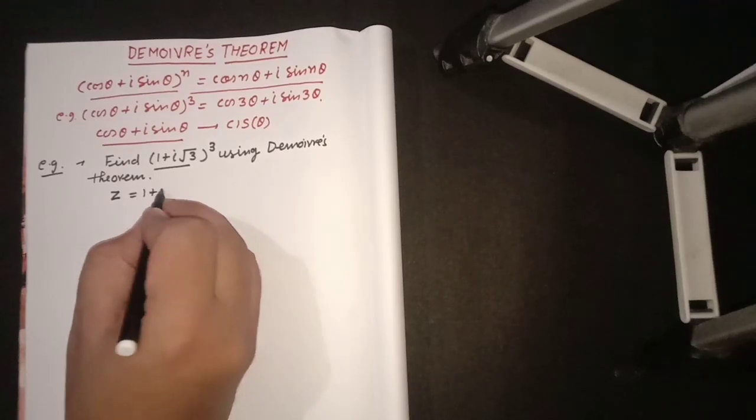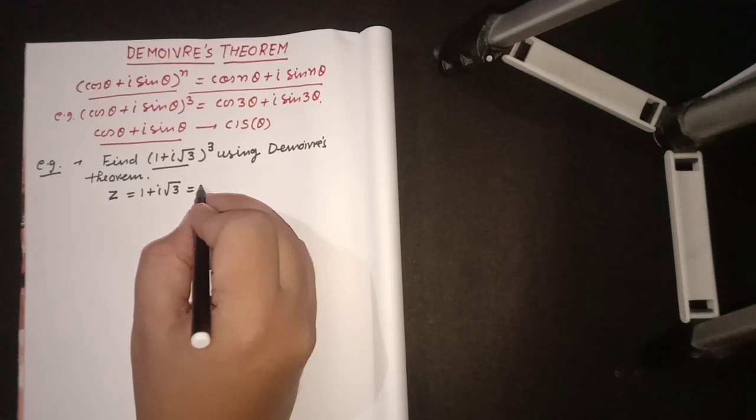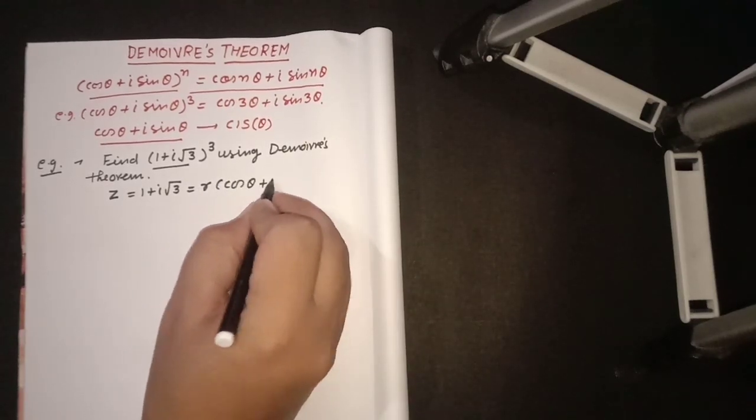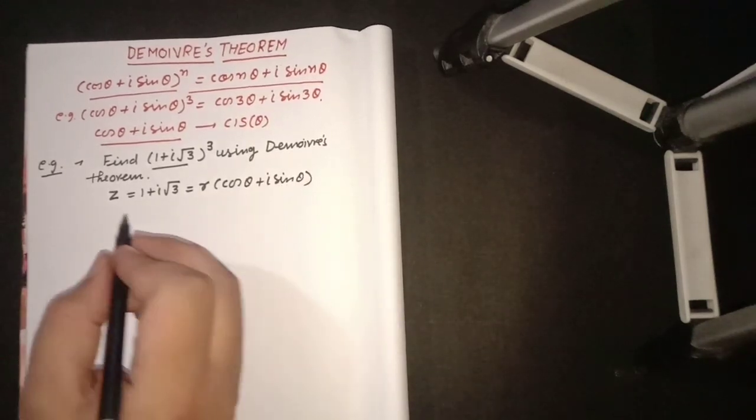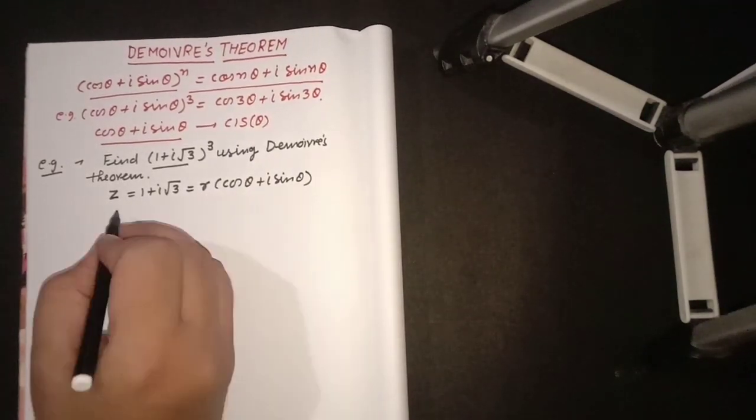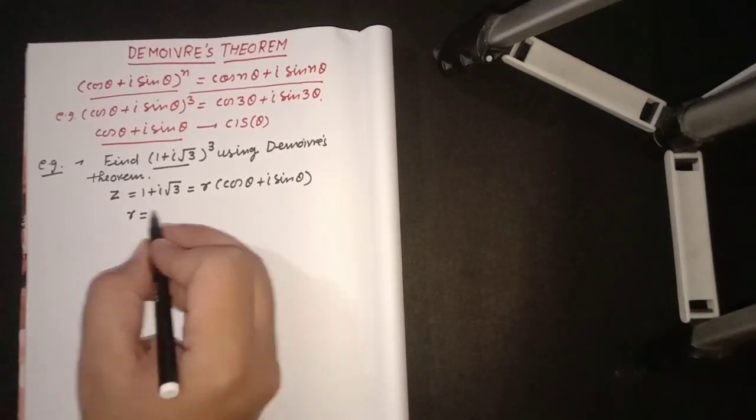The complex number is 1 + i√3, and it can be written in polar form as r(cos θ + i sin θ). It is the polar form. Now we have to calculate r and θ. So r is the modulus. How do we calculate the modulus?